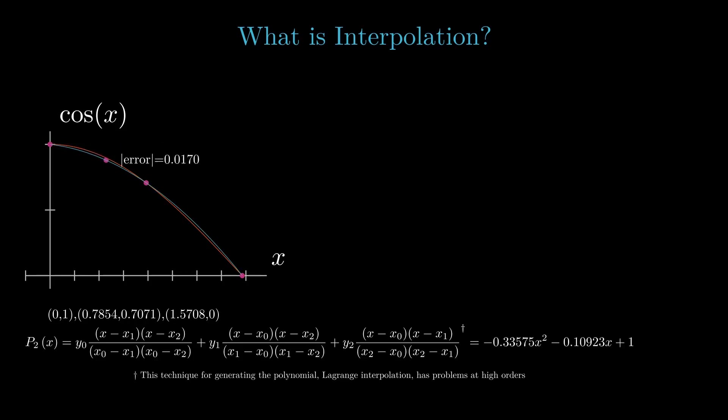To increase accuracy, we could use all three points and fit a parabola and reduce the maximum error to 0.02. So far, it seems like we can achieve any desired accuracy by simply increasing the order of the polynomial and using more nodes. But does this actually work?